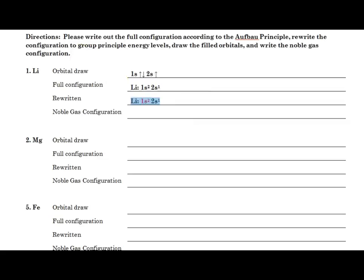Then rewritten, and in this case the rewrite is the same because it's in numerical order already. You'll see when we get into the d sub level, that's when you really need to rewrite things. Notice that I highlighted here the 1s2 in red. Why did I do that? Well, because 1s2 is the same configuration as helium.